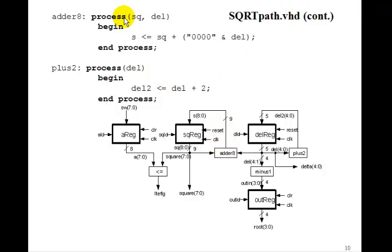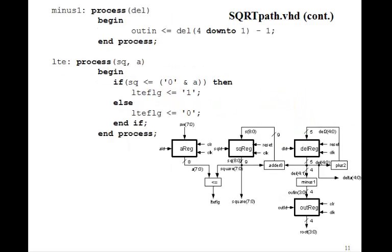We'll need this adder, adder 8. It's really a 9-bit adder, remember. The output S here is just going to be Sq 8 down to 0, added to the output del, which was 5 bits. So we'll add 4 more leading bits. Plus 2 is going to just add 2 to del. So del 2 is just del plus 2. Our minus 1. Now here, remember, we really wanted to get delta over 2 minus 1. And remember the trick we're going to use. We'll take del 4 down to 1. Well, 4 down to 1 is just like shifting delta 1 bit to the right. That divides by 2 and then minus 1. So this both divides delta by 2 and then subtracts 1 to get out in.